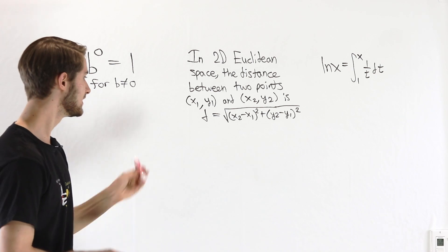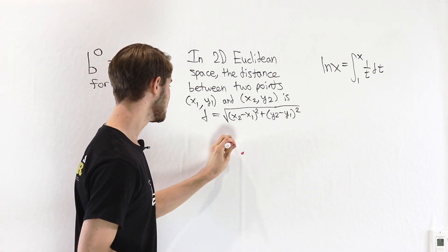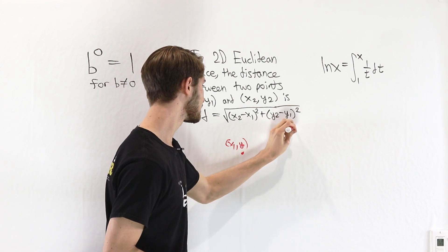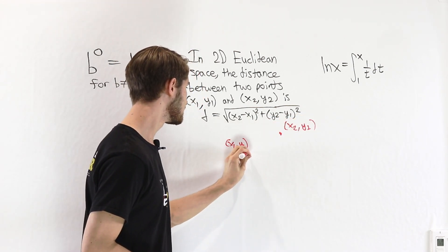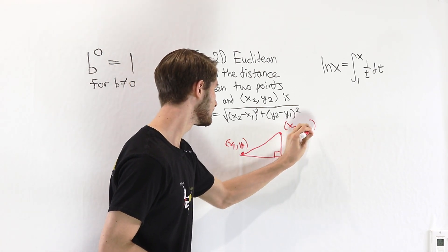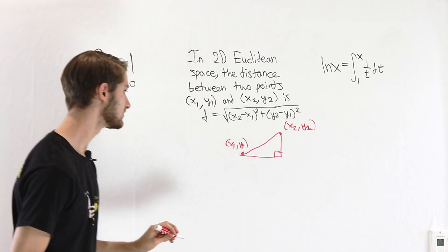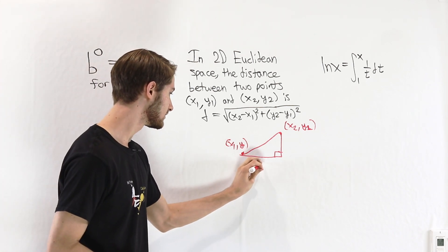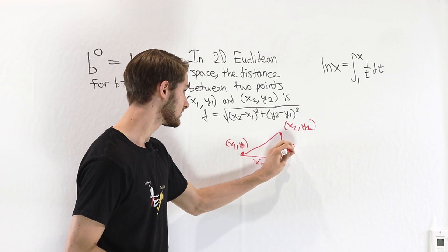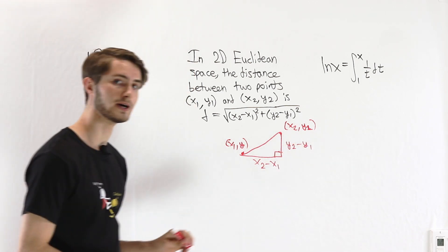And the reason you'd think that is if we have two points (x1, y1) and over here (x2, y2), we can construct a right triangle like this between those two points, where the length on the bottom here is x2 minus x1, and the length on the side is y2 minus y1.